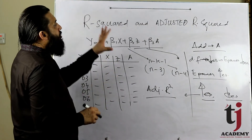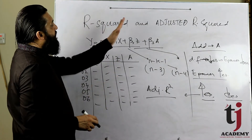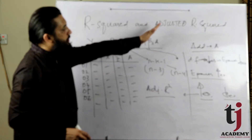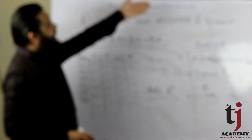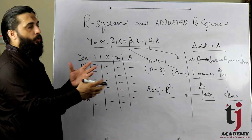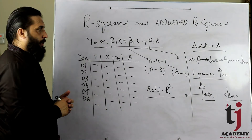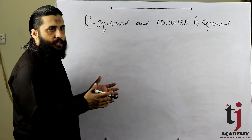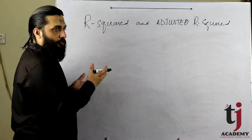یہ تو main concept تھا جو main difference ہے R² اور Adjusted R² کا، اور adjusted R² کیوں زیادہ بہتر measure ہے۔ اب اس کے formula پر تھوڑی discussion کرتے ہیں۔